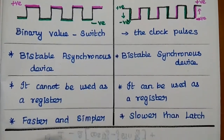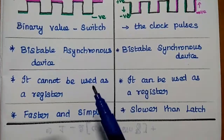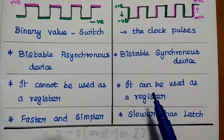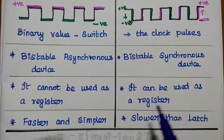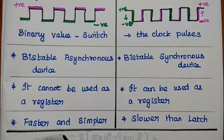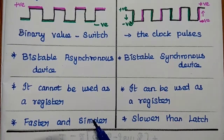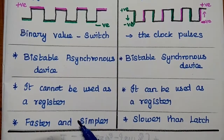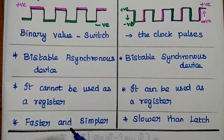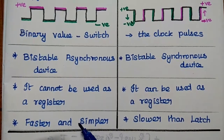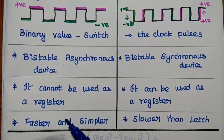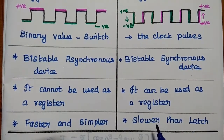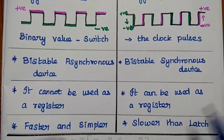Latch cannot be used as a register, whereas flip-flop can be used as a register. Latch is faster and simpler because it does not have clock pulses — it depends only on the enable signal, so its operation is faster than flip-flop. Flip-flop is slower than the latch.